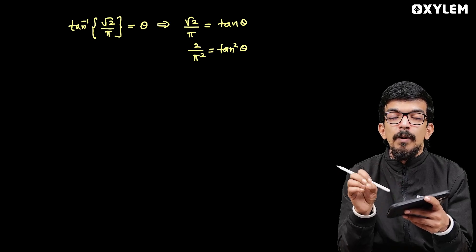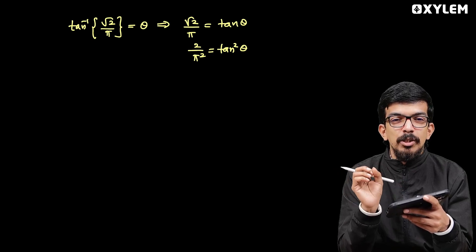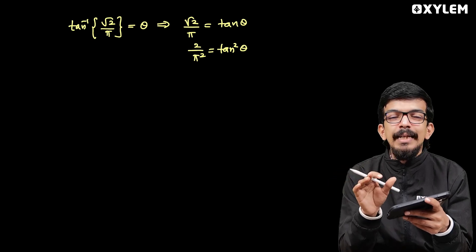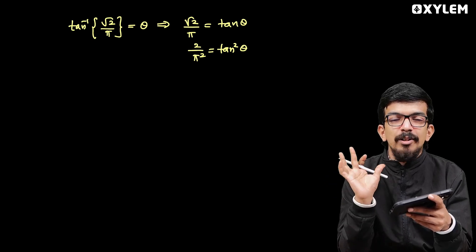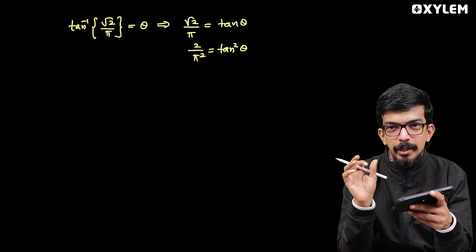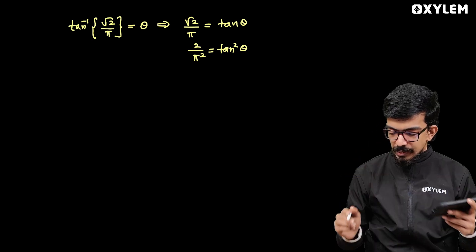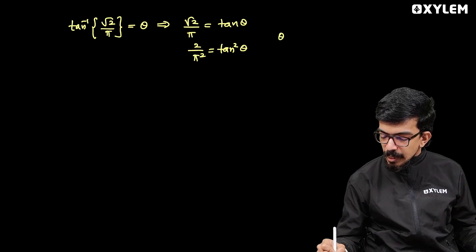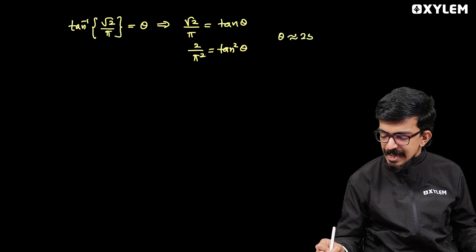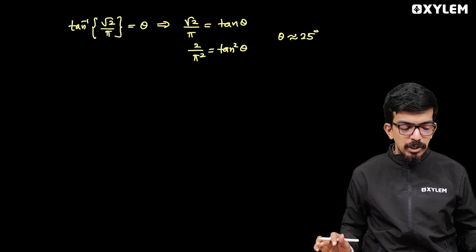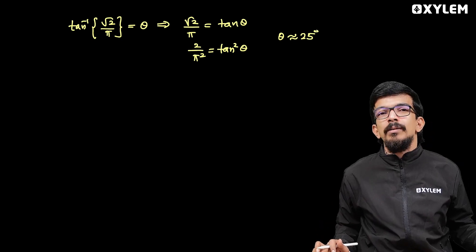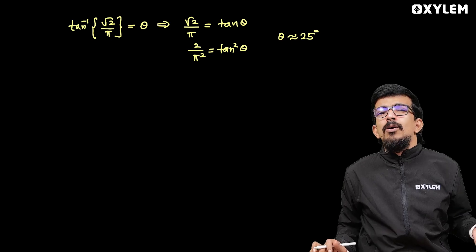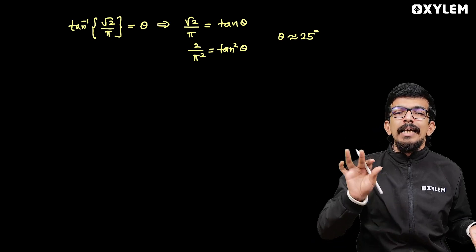So √2 by π is approximately 0.45. The standard angle: 30 degrees has tan value approximately 0.577. So theta is approximately 25 degrees — that's the idea. We have to go to the standard value, we have to go toward 30 degrees.